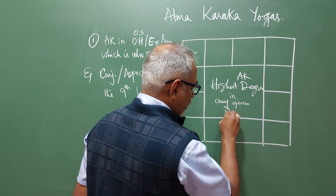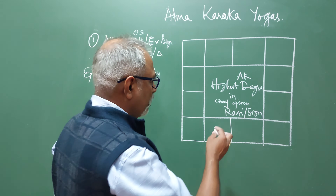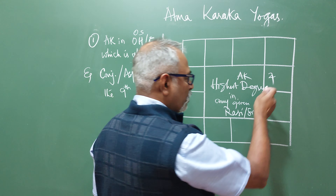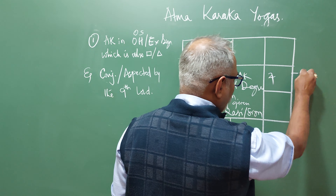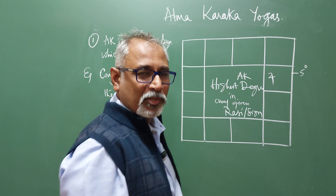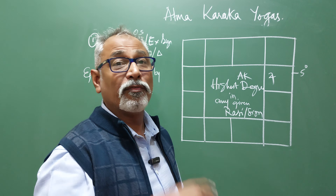Atmakaraka is in the own house, exaltation sign, or own sign. What is an Atmakaraka? Atmakaraka is the planet with the highest degree — the highest degree in any given Rashi, or what we call a sign.